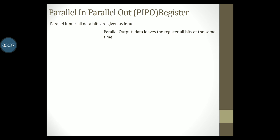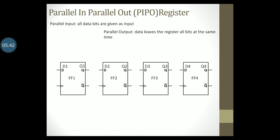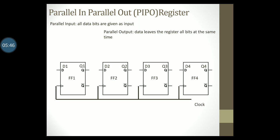To design a four-bit PIPO register we will require four flip-flops. As in all registers, the same clock signal will be given to all the flip-flops making up this register. Data will enter this register in parallel form — that is, all the bits will be given as input at the same time — through all four flip-flops simultaneously, that is through D1, D2, D3 and D4.